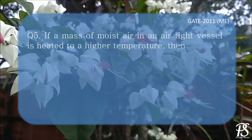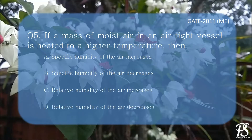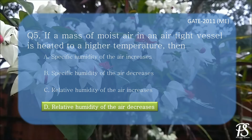If a mass of moist air in an airtight vessel is heated to a higher temperature, then: A. Specific humidity of the air increases. B. Specific humidity of the air decreases. C. Relative humidity of the air increases. D. Relative humidity of the air decreases. Since the air is heated in an airtight vessel, there cannot be any addition of moisture. Hence, the specific humidity cannot change — the process is sensible heating. During sensible heating, the air moves away from the saturation line, so the relative humidity decreases. The correct option is D.